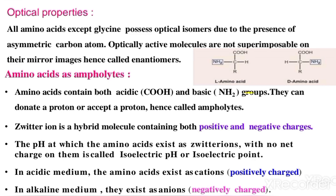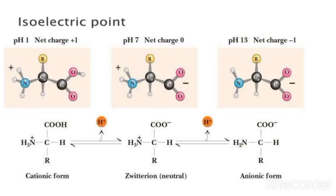In this structure we can see L-amino acid and D-amino acid, which are mirror images of each other and optically active. The isoelectric point is in the middle. pH 1 represents acidic medium, pH 7 is neutral medium, and pH 13 is basic medium.